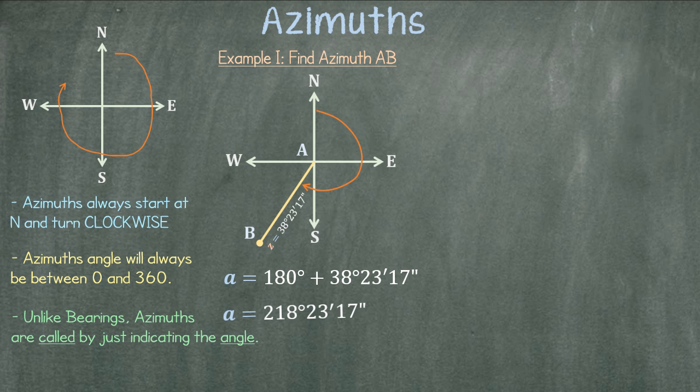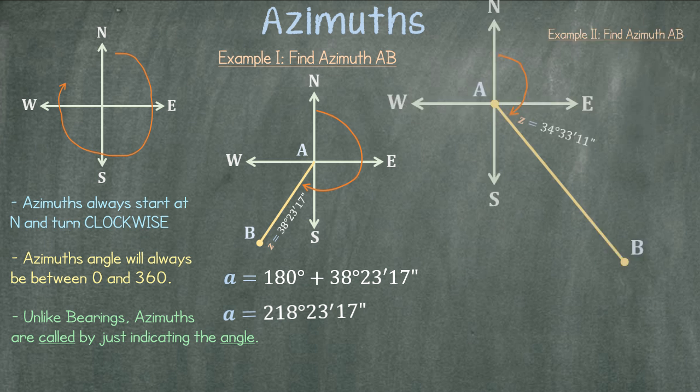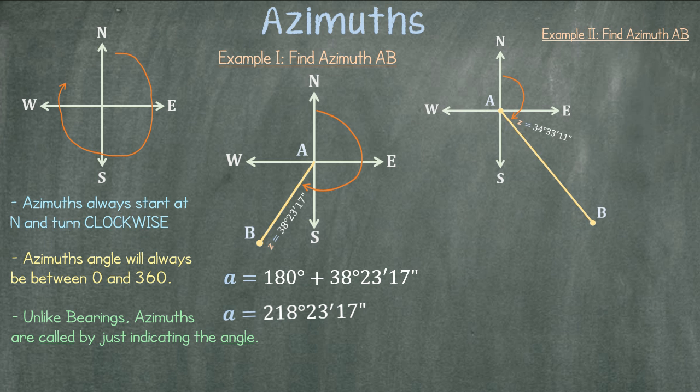In our next example we are again asked to find azimuth AB, but this time we only have one full quadrant to add to our given angle. The total angle for the azimuth is 124 degrees 33 minutes and 11 seconds.